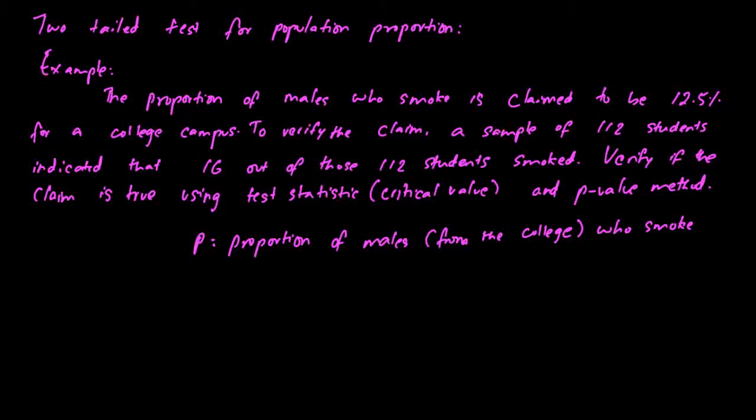We have to verify if the claim is true using the test statistic, also known as critical value, and the p-value method. P is the proportion of males from the college who smoke, and let us assume that alpha is 0.05, so 0.05 would indicate 95% confidence.